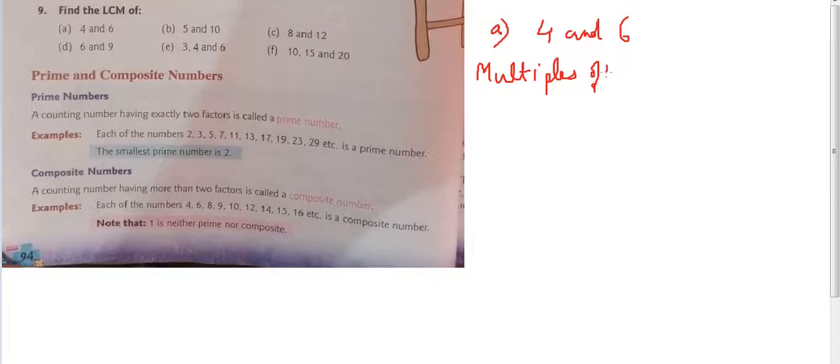First we will find multiples of 4. Multiples means we simply write the table. Multiples of 4: 4, 8, 12, 16, 20, 24, 28, 32.